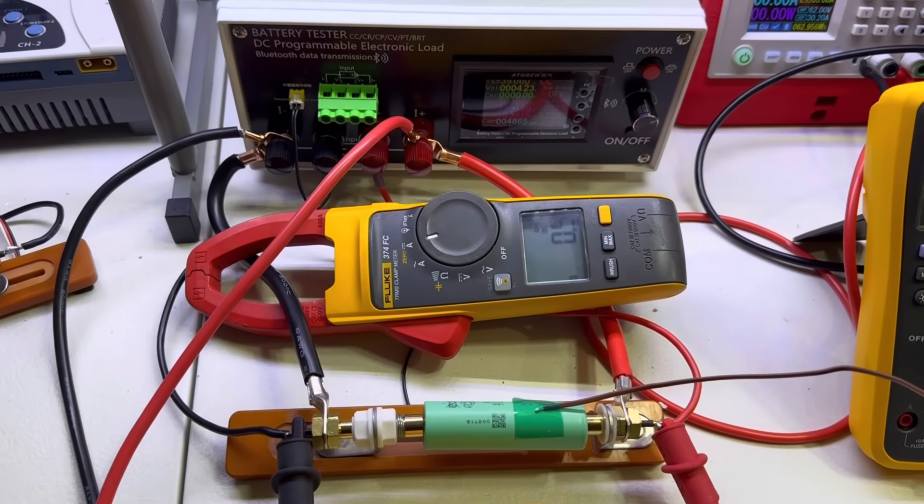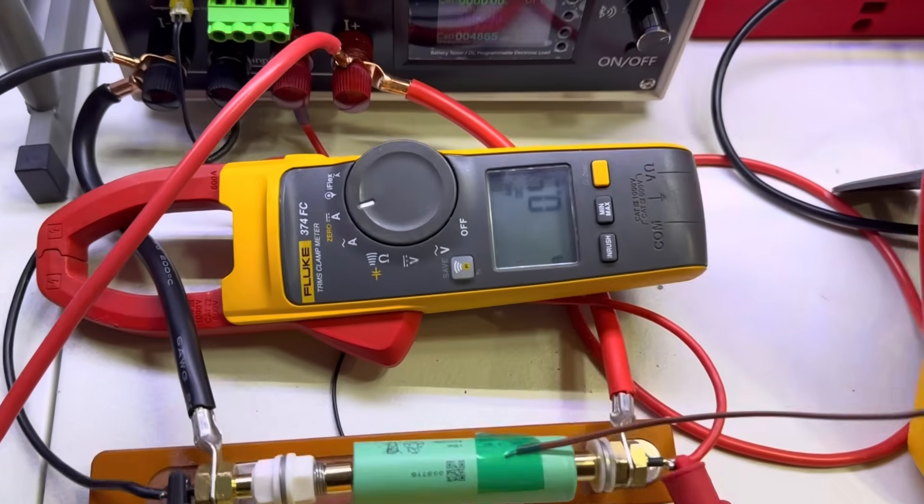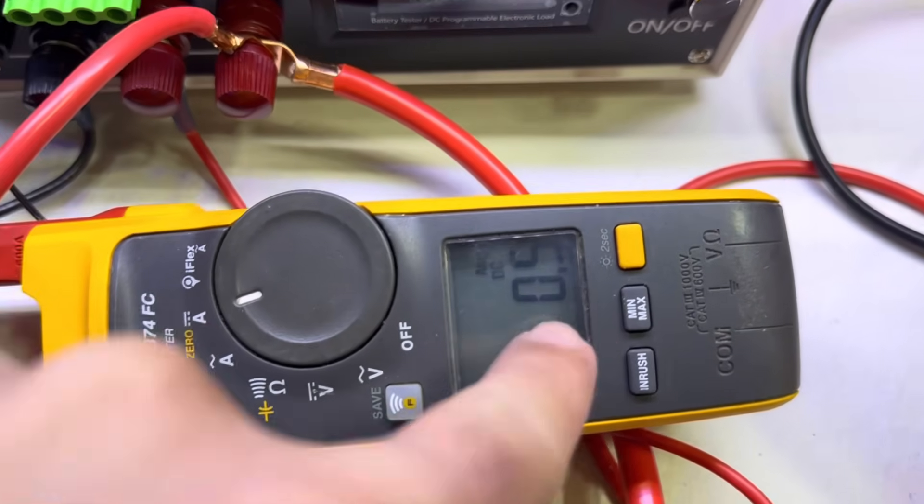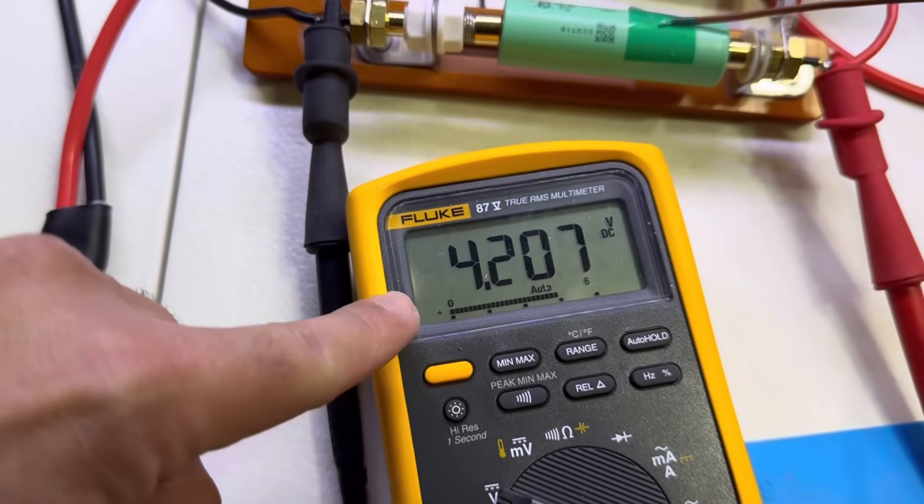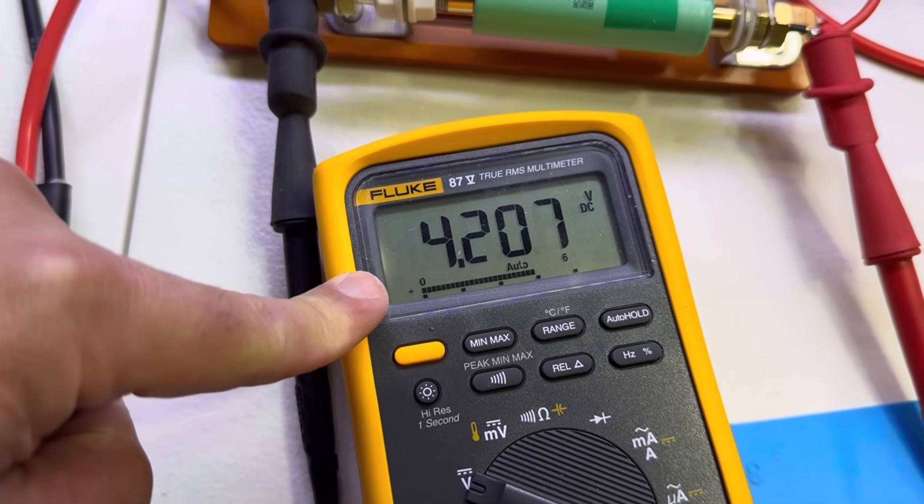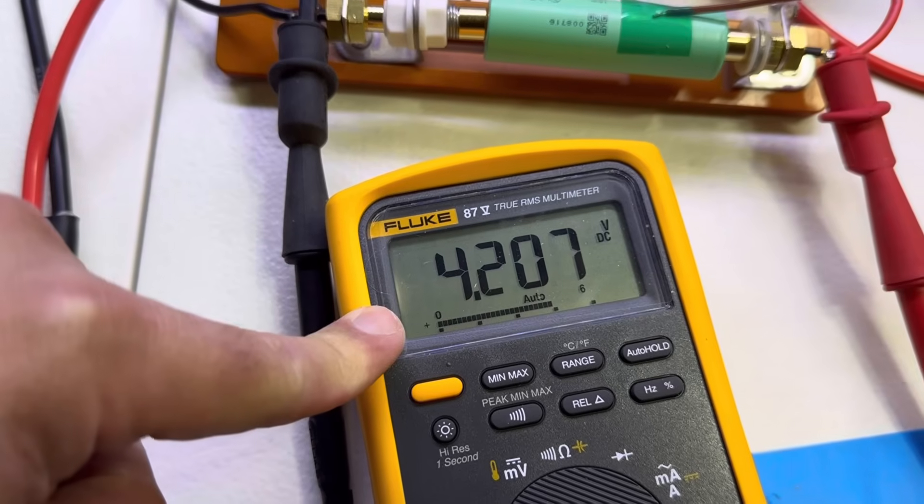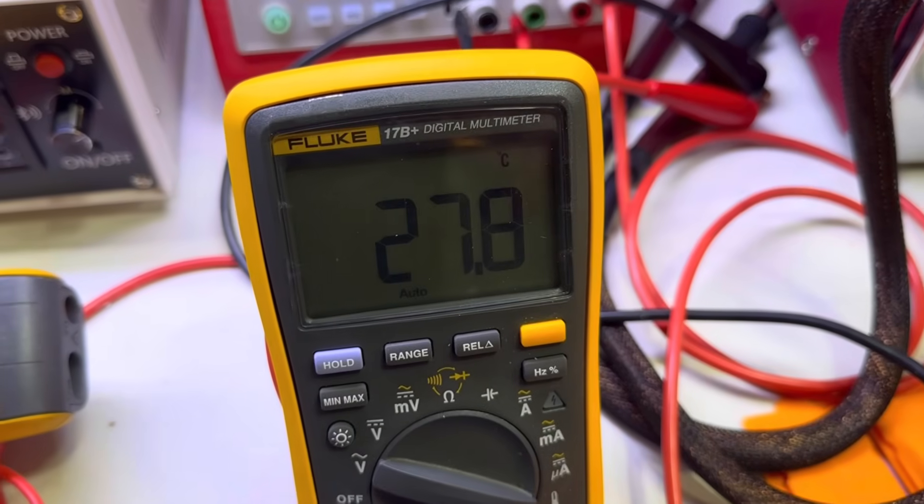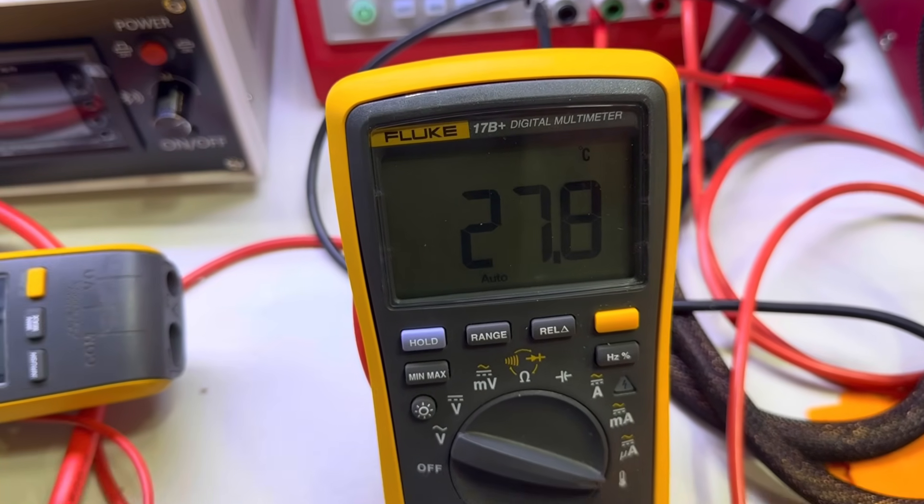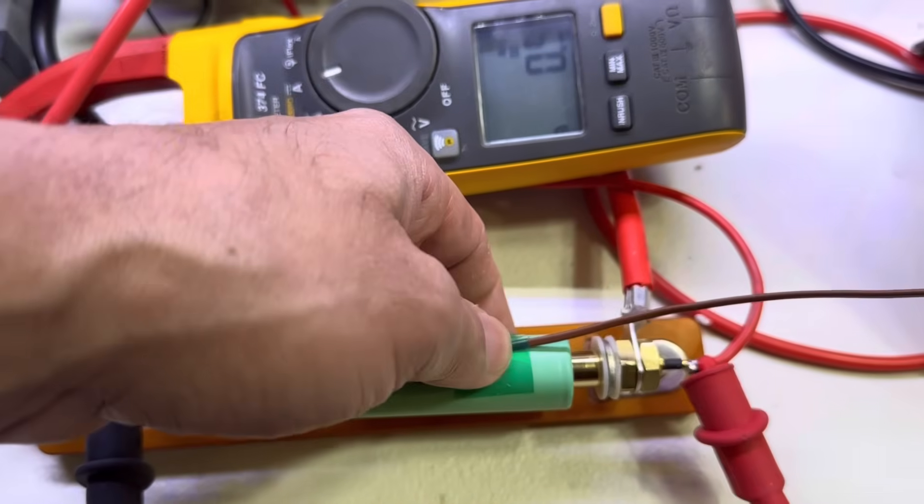I'm gonna be measuring the current right now with this clamp on this cell. I have the cell fully charged. We're gonna monitor the sag to see how much the cell sags under that load, and here I have monitoring the temperature of the cell.